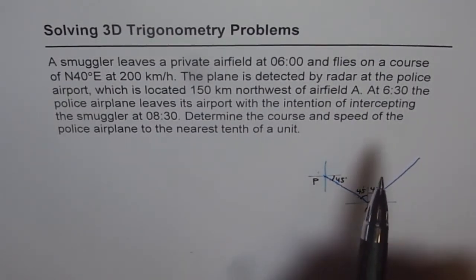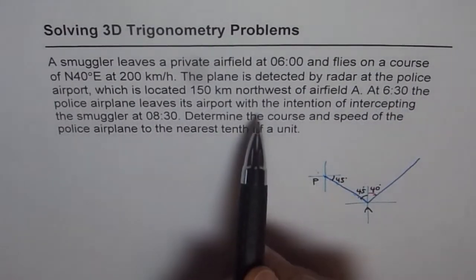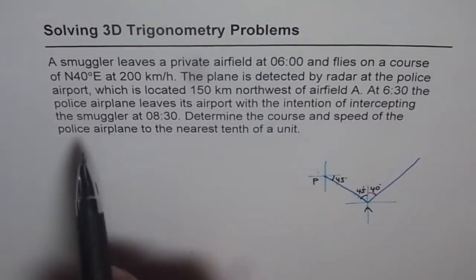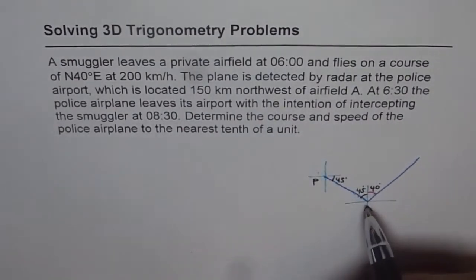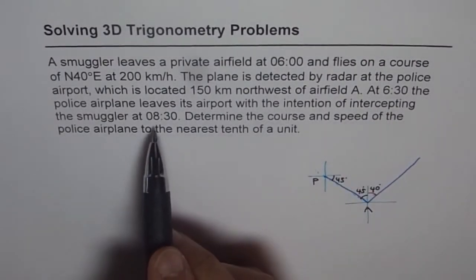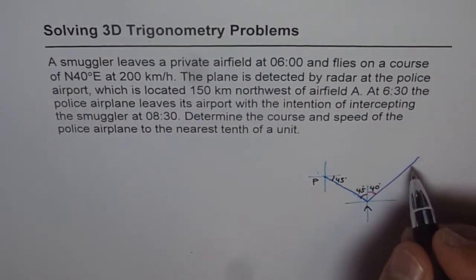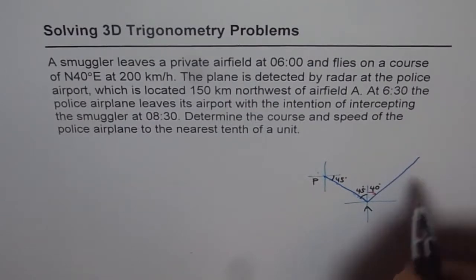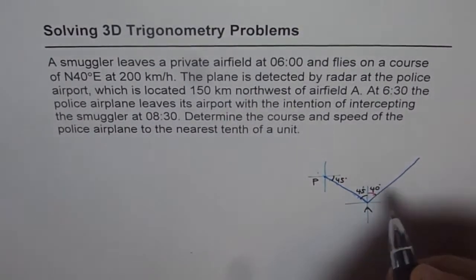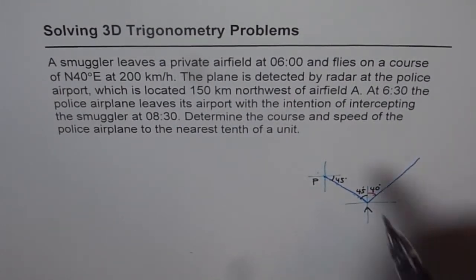The plane is detected by radar at the police airport which is 150 kilometers northwest of airfield A. So northwest will be somewhere on this direction, going like this. So let me just make a dotted line here. And that is northwest. And somewhere there we have the police airport. Let me sketch a line, 150 kilometers from here.